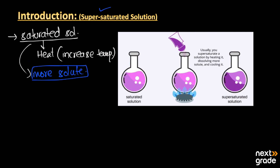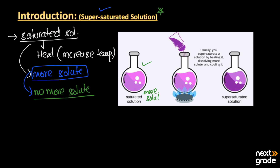By increasing the temperature, the solute starts to dissolve, and upon heating a point comes when no more solute can be dissolved. At that point, the solution will be called the super saturated solution. As you can see in this picture, we have a saturated solution that already has more solute in it and cannot dissolve more solute.